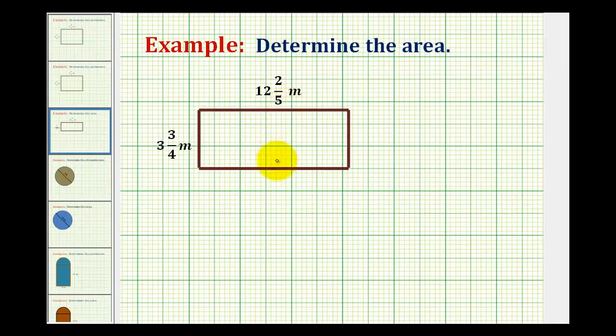We want to determine the area of this rectangle with the dimensions given as mixed numbers. Because the dimensions are given in meters, the area would be the number of square meters that would fit inside this rectangle, modeled by this shaded region.